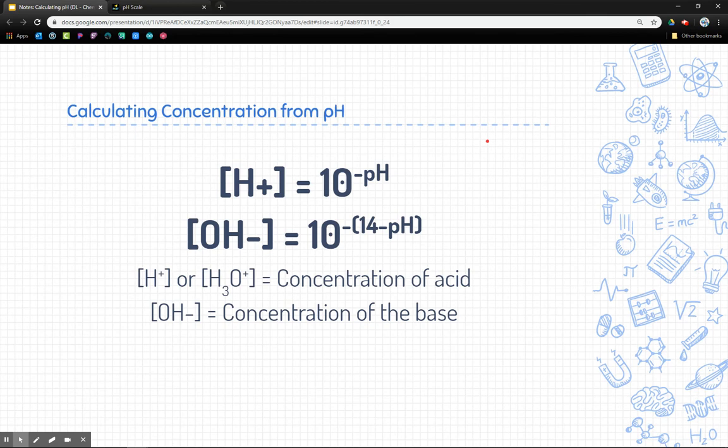All right. Let's end by talking about how to calculate concentration from pH. So we're kind of flipping the script here. Let's say we knew the pH of a solution and we wanted to figure out what the concentration of either the acid or the base was. So there's two formulas here. This formula, one of them is written on your periodic table, but I don't believe the other one is. The one that's written on your periodic table is this top one right here. The concentration of the acid is determined if you take 10 and use the negative pH as an exponent in order to figure that out.